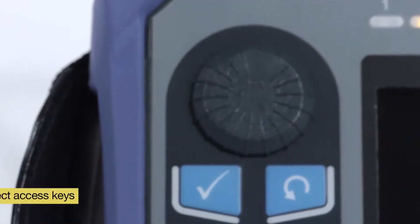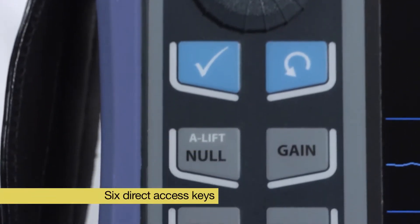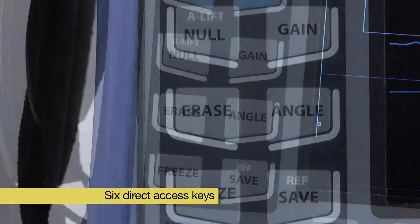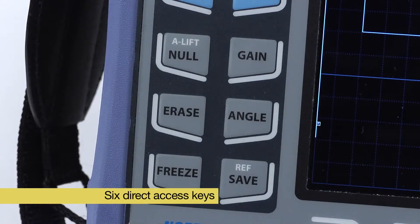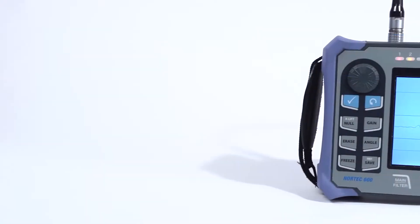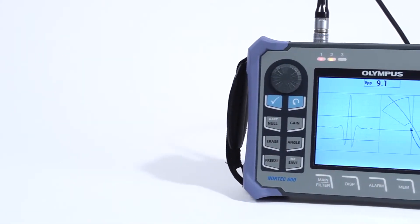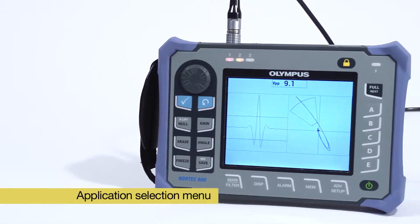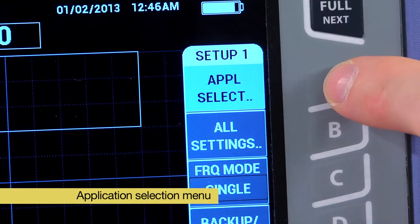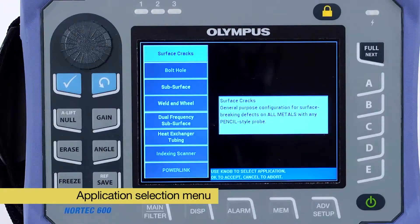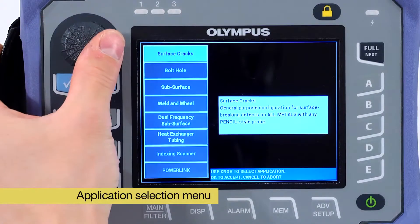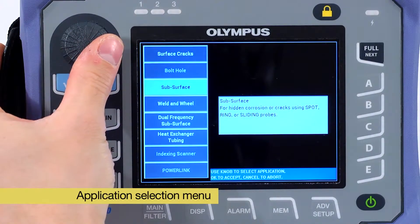The Nortec 600 also features a set of six direct access keys in order to speed up the most common operations such as adjusting the gains or phase angle. The instrument includes several new highly acclaimed features such as the new application selection menu. This menu streamlines the configuration of the instrument for a given inspection literally within seconds.